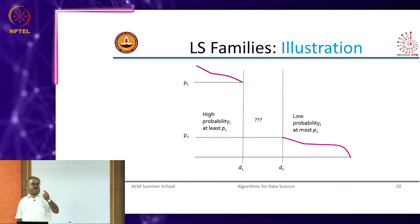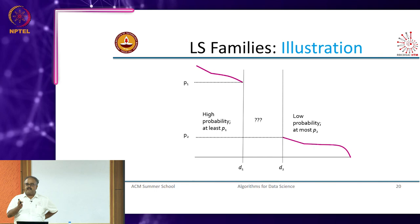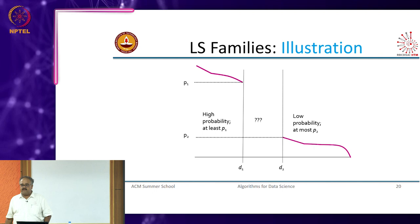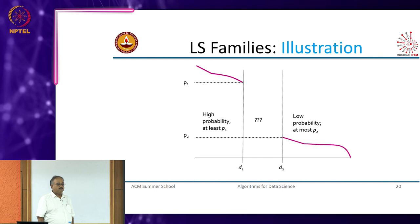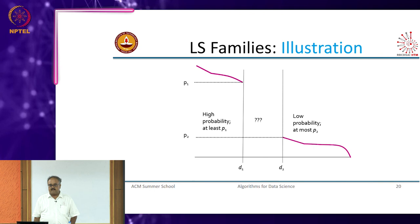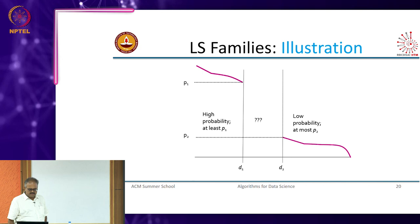Most hash functions have construction techniques that allow you to move D1 and D2 pretty close while retaining the guarantees on P1 and P2. If I give you one family of hash functions satisfying the D1, D2, P1, P2 guarantee, there are ways of constructing derived families that will move D1 and D2 closer while pushing P1 and P2 farther apart. Nothing is said about what happens between D1 and D2, which makes life a little easier.